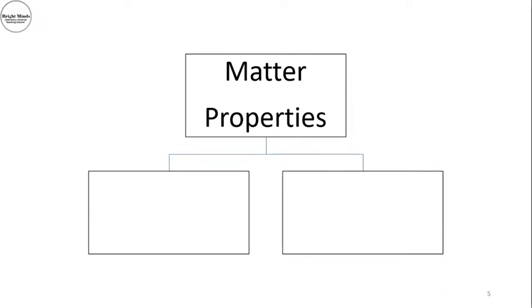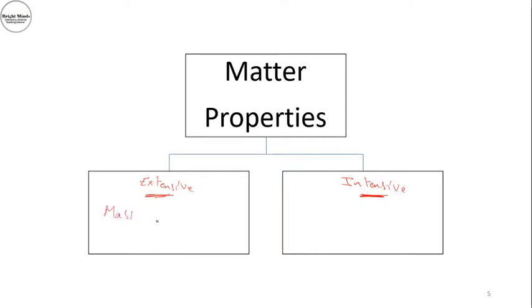The properties of matter are classified into either extensive properties or intensive properties. Extensive properties depend on how much matter is involved, while intensive properties do not depend on how much material is involved. Examples of extensive properties are mass and volume.